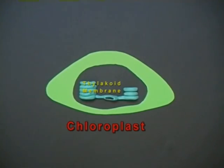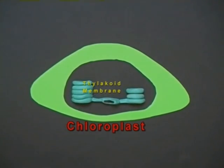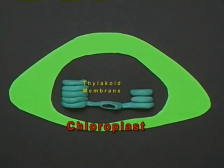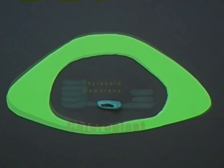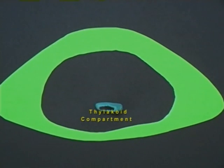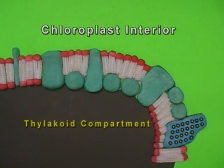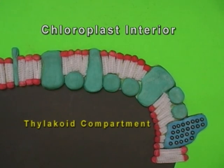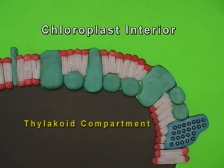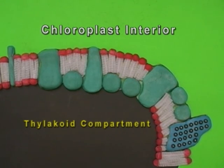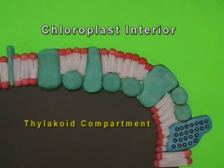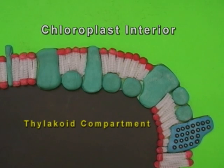Within the chloroplast is the thylakoid membrane. This is where old water is split. The thylakoid membrane has many interconnected compartments. Welcome to the world of the very small — the thylakoid compartment is so small it can split hydrogen atoms into protons and electrons.